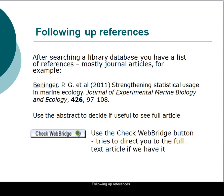After searching a library database, you'll have a list of references, mostly to journal articles. For example, there's an article here by Benninger et al. with the title Strengthening Statistical Usage in Marine Ecology. It was published in the Journal of Experimental Marine Biology and Ecology in volume 426, no issue is given, and appeared on pages 97 to 108. Use the abstract of the article — that is the summary — to decide if it is useful to see the full text of the article.